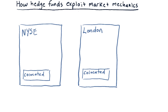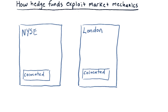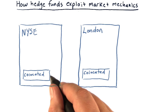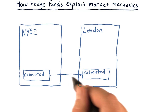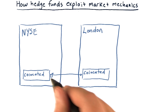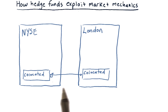There are certainly many ways to exploit market mechanics. Here's one more — I call this one the geographic arbitrage exploit. Suppose we have exchanges located some distance away, and because they're located distantly, prices may drift a little bit up or down. A hedge fund might place their own servers at each of these exchanges and connect them with an ultra-high-speed dedicated connection.